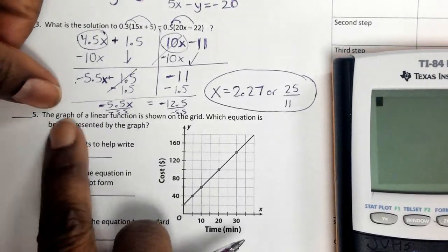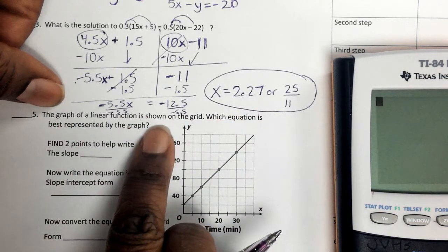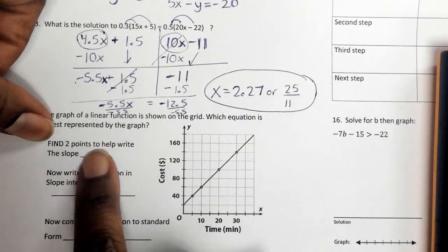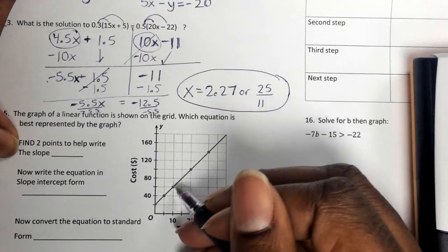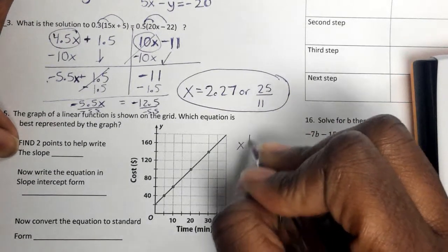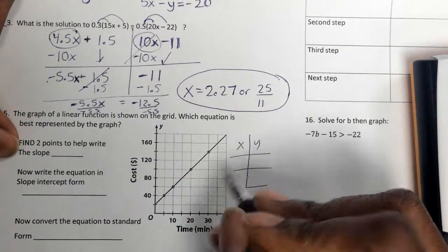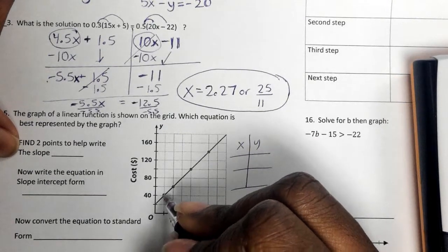Number 5 says, the graph of a linear function is shown on the grid. Which equation is best represented by the graph? It kind of walks you through the steps. It says, find two points to help write the slope. You see, they give you a whole bunch of perfect points here. I'm just going to find two of them. Then once again, once I find two points, StatEdit will help me write it in slope-intercept form. So I'm going to use this one.